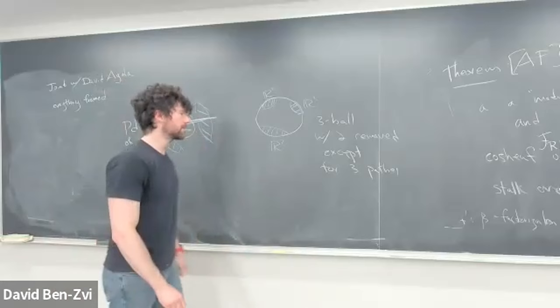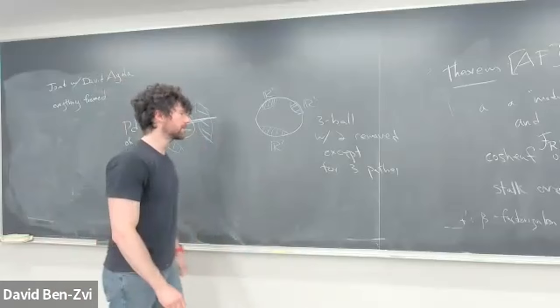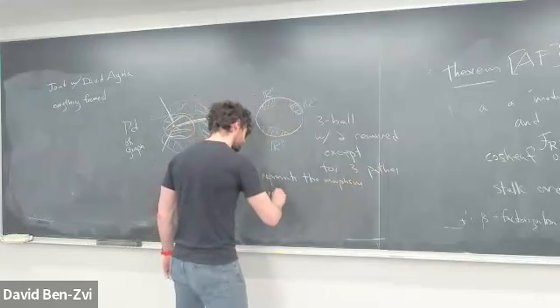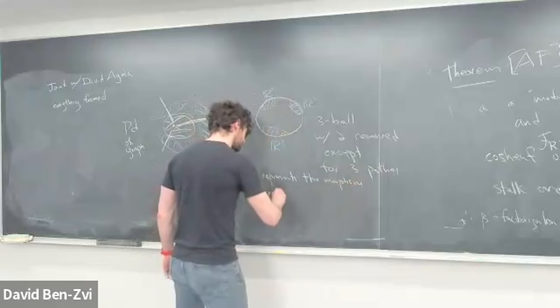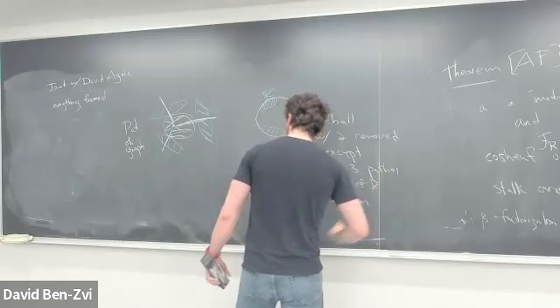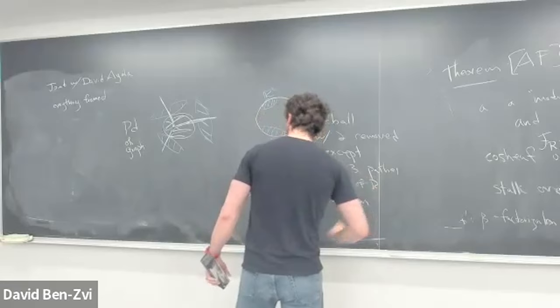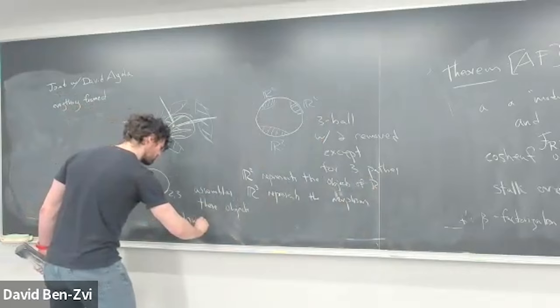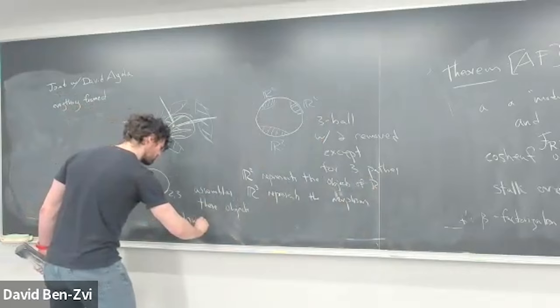R^2 represents the objects of R and R^3 represents the morphisms. There's a category we'll call D_{2,3} that assembles these kinds of objects and morphisms. The objects are the Poincaré duals — basically equivalent to a graph — and the morphisms would correspond to one-fundamental deformations. We need to bring in the category of labeling data and say that given R, there exists some functor — landing in the infinity category of spaces — such that R's value on R^2 is the space of objects of R, and R's value on R^2 times an interval is the morphisms.